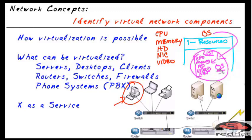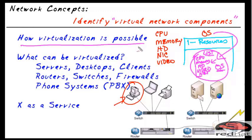When talking about virtualization and virtual network components, I want to point out that virtually anything can be virtualized. How is it possible? We take systems that are expecting certain resources to be available, and in software we make it look like they're available.